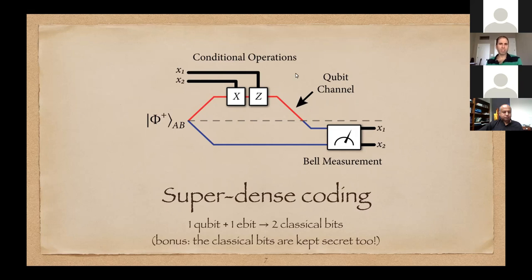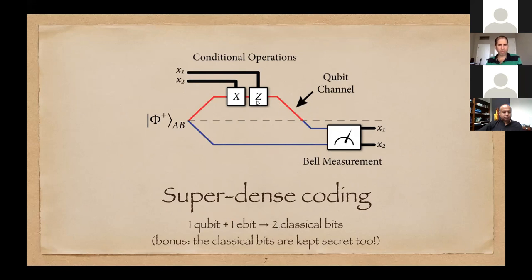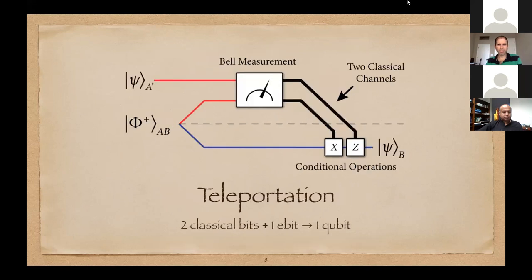The basic superdense coding protocol can be viewed as a conversion: you consume a qubit and an ebit as resources, and from those resources you produce two classical bits that can be communicated.